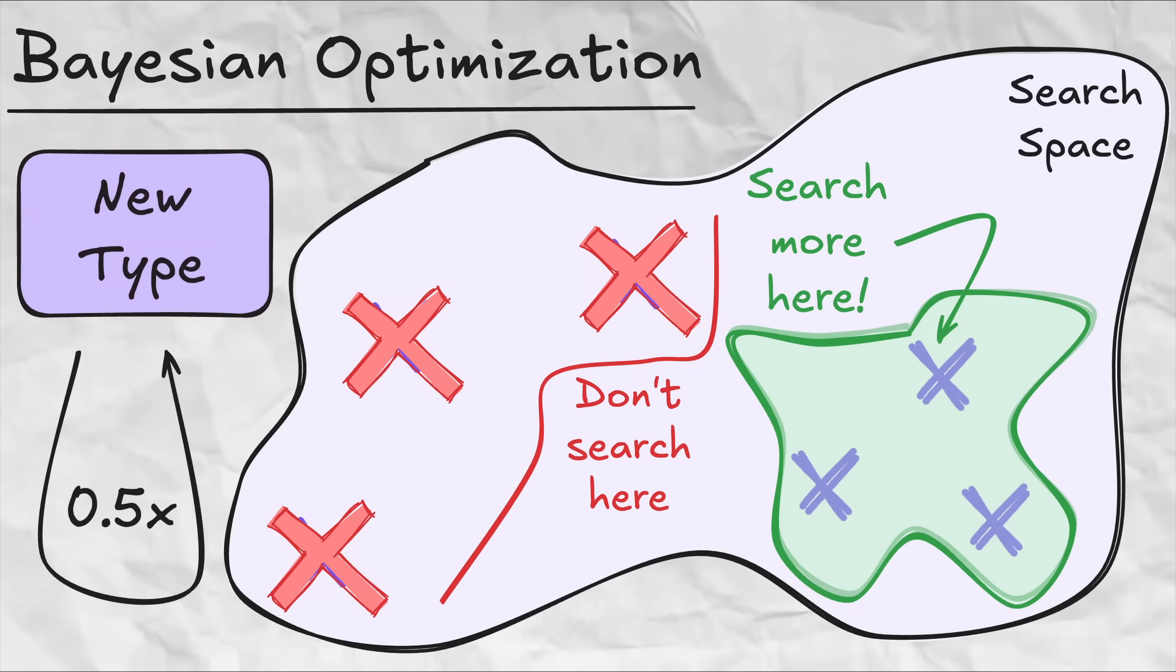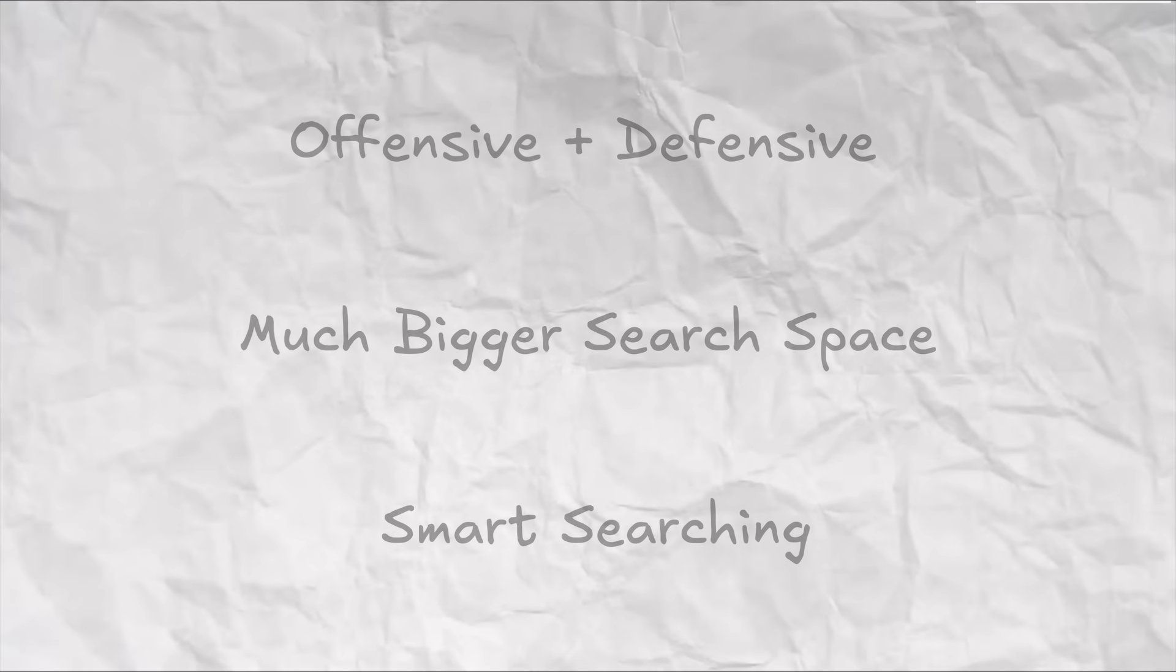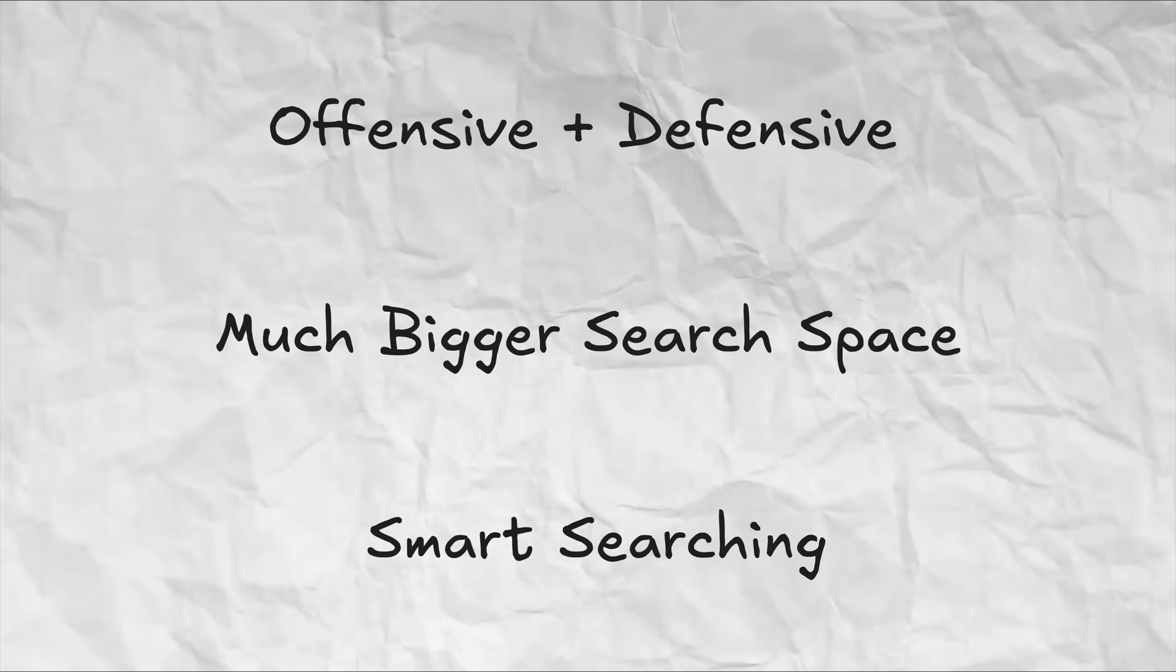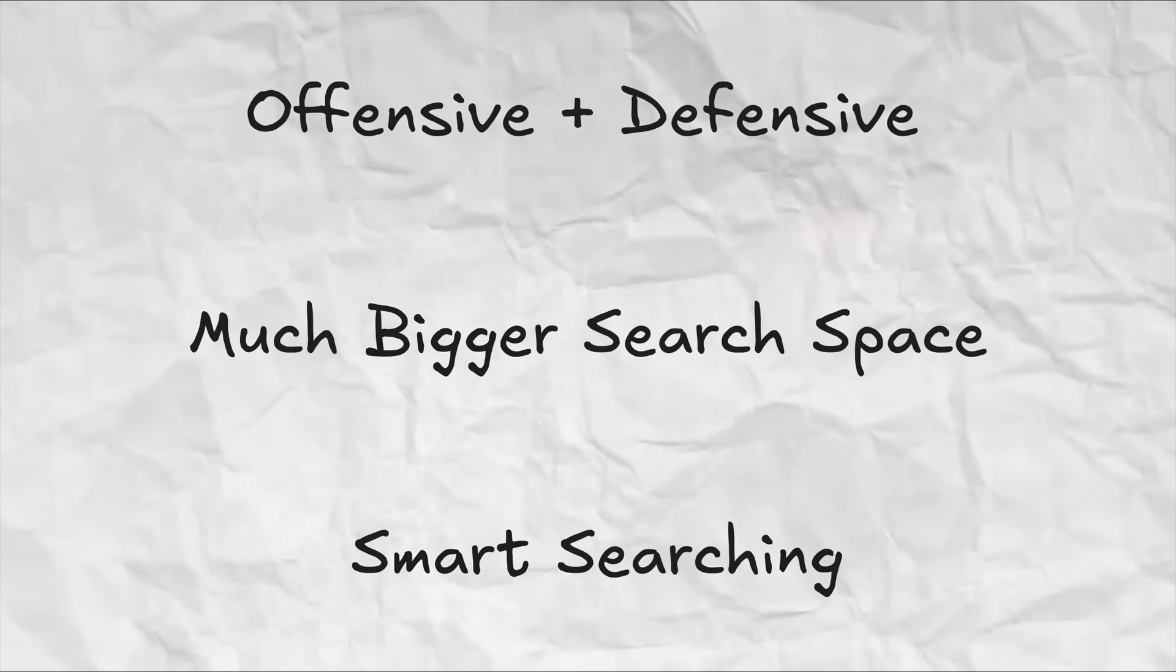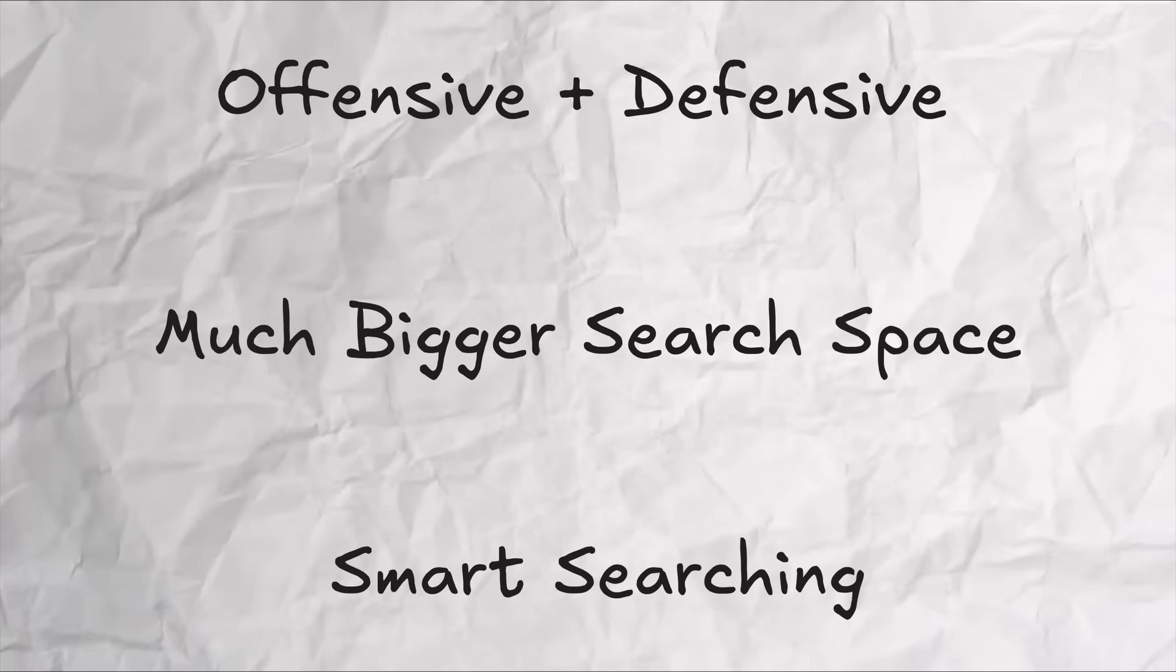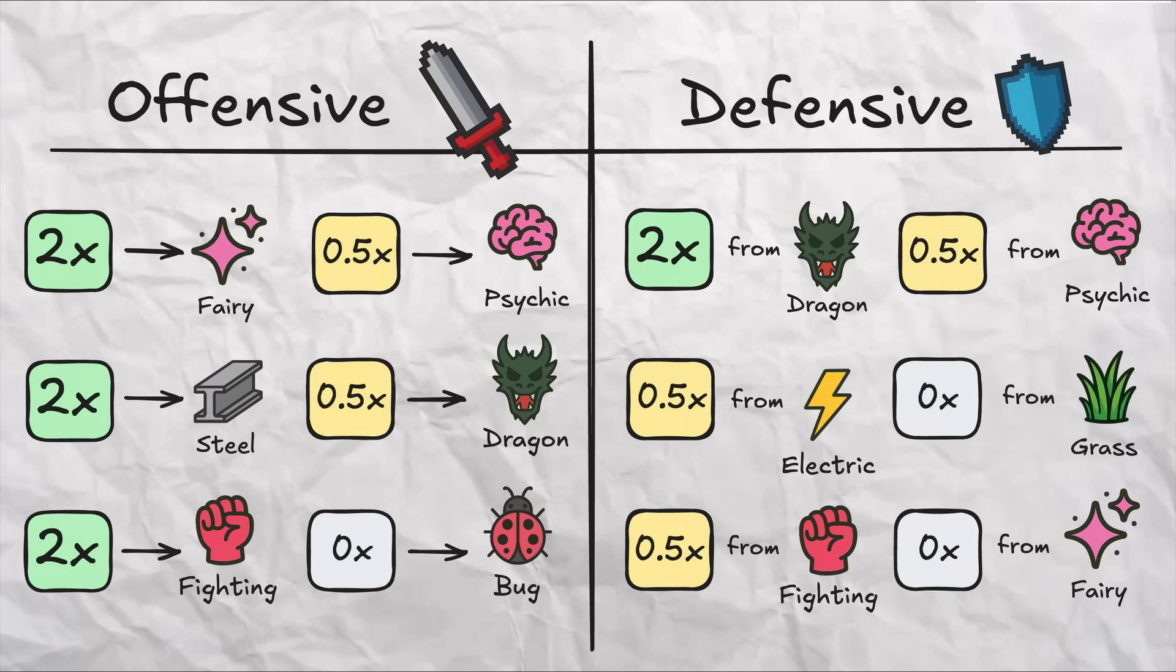One quick note is that we did keep the assumption that the new type is half effective against itself, mostly to keep the constraints on the new row independent of the constraints on the new column, making this all technically a lot more feasible. And so, taking into account both the offensive and defensive relationships, using way more relaxed constraints than we did before, and using a smart search over that much bigger space of possibilities, we get that the actual new best type in the game has the following offensive and defensive relationships.